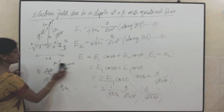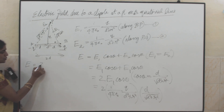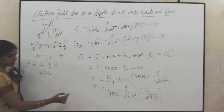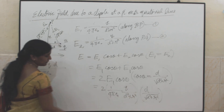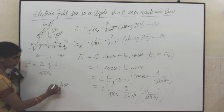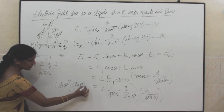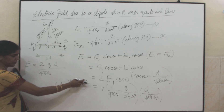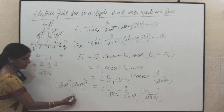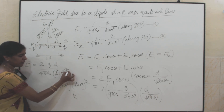Adding these together, I can write the resultant electric field as 2QD by 4 pi epsilon, multiplied by 1 over (D squared plus R squared) times root of (D squared plus R squared). This gives (D squared plus R squared) to the power of 3 by 2 in the denominator, since multiplying gives the exponent 1 plus 1/2 equals 3/2. So the resultant field is 2QD by 4 pi epsilon naught times (D squared plus R squared) to the power 3 by 2.